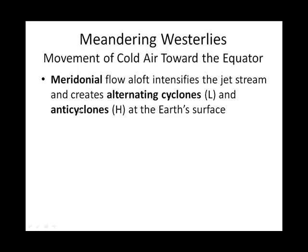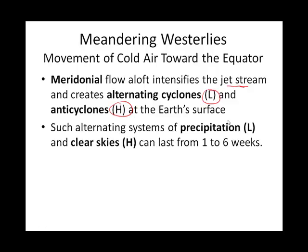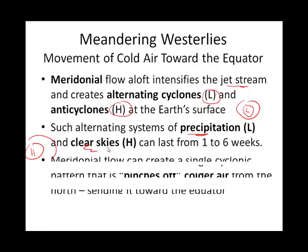Meridional flow — the peaks and troughs — tends to intensify the jet streams. What it can also do is create alternating low pressure and high pressure at the Earth's surface. When you see a central low on the surface map, think clouds or precipitation. If you see a central high pressure, there's a good chance you'll have clear skies when that system gets to you.